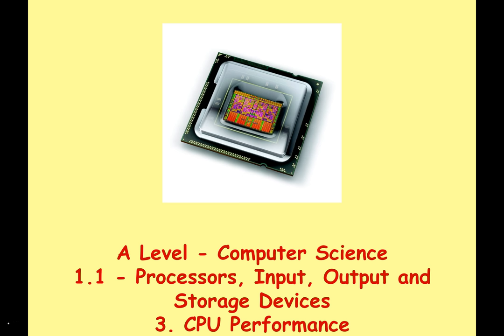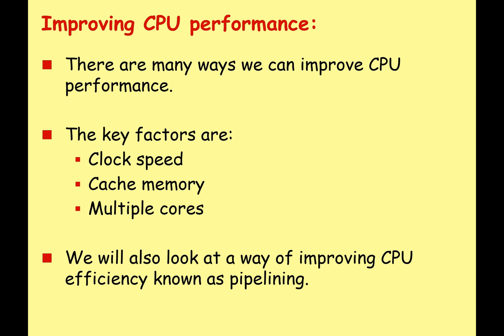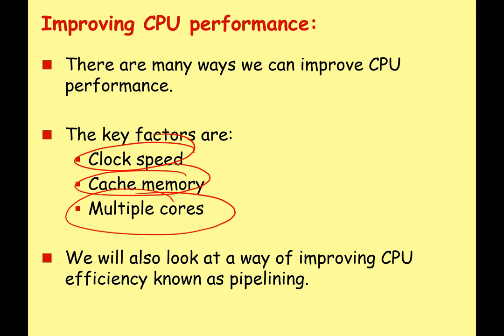Hello, and welcome to the third video on processors, input, output, and storage devices. Today, I feel the need, the need for speed — we're going to be looking at CPU performance. There are many ways that we can improve CPU performance. The key factors you need to know about at this level are clock speed, cache memory, and multiple cores. We're also going to look at a way of improving CPU efficiency, known as pipelining.